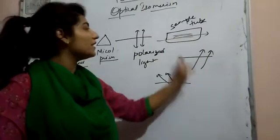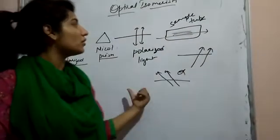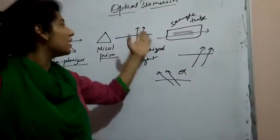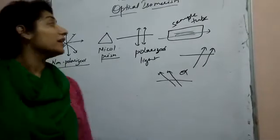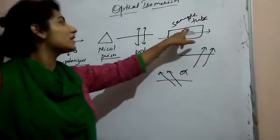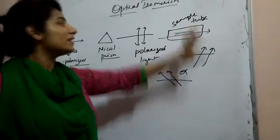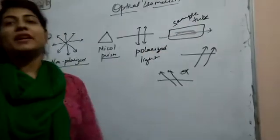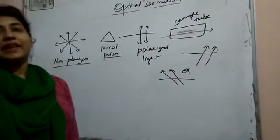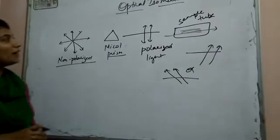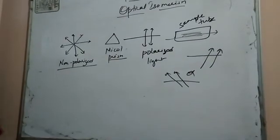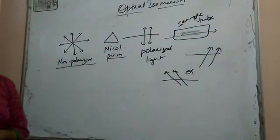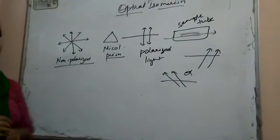If the polarized light rotates clockwise or anti-clockwise through the sample tube, it means the compound present in the sample tube will be optically active. When it is optically active, we will discuss some important points.